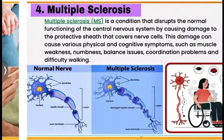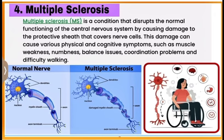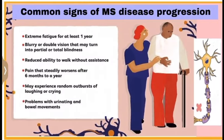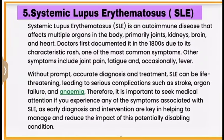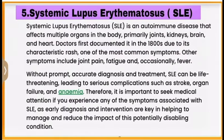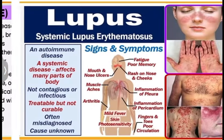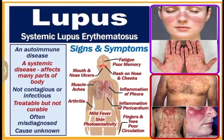Number four: multiple sclerosis, including some common signs and disease progression. Number five: SLE (Systemic Lupus Erythematosus) and its symptoms.